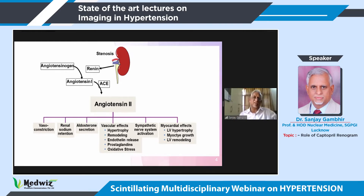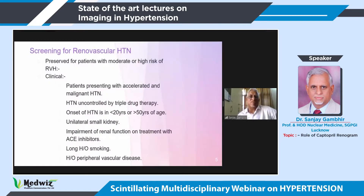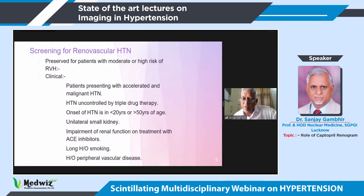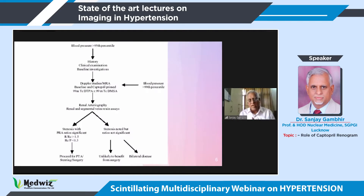Screening for renal vascular hypertension is where our role comes in. Which patients do you really suspect? Sudden change in previously controlled blood pressure, young adults presenting for the first time, unilateral small kidney, and impairment of renal function with ACE inhibitors — that is another indication which nephrologists notice when they suspect the renal artery may be involved. So how to proceed, and there are many tests.